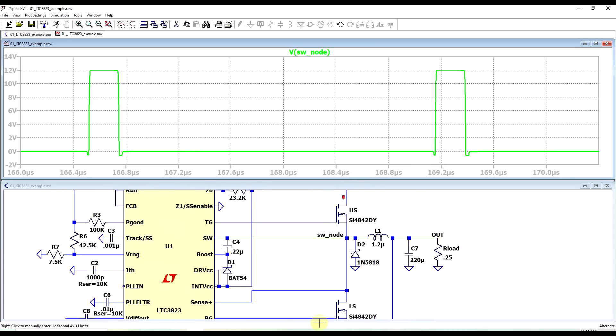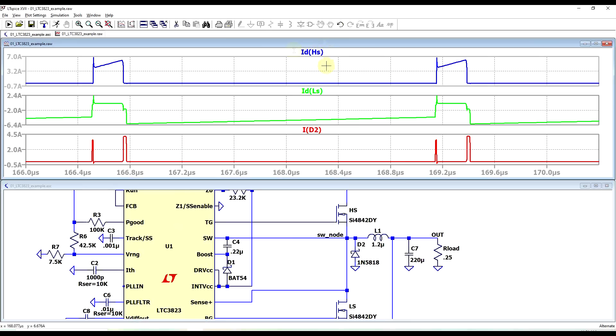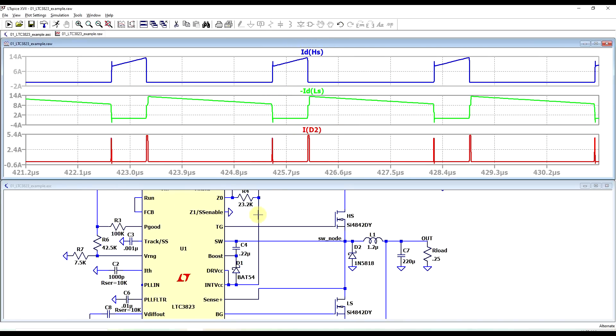Now if we check the currents through the three main components, so the current in the drain of the high side switch, the current in the drain of the low side switch, and the current in the diode, we start to see the first differences compared to what we discussed previously.